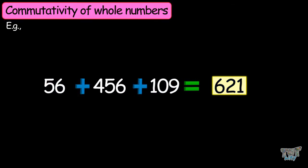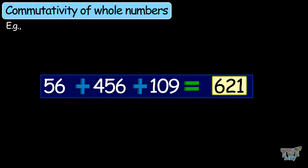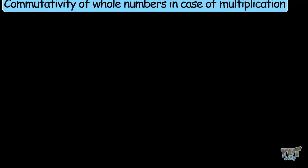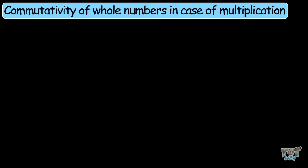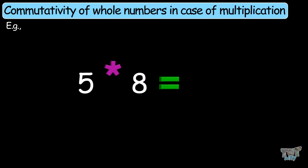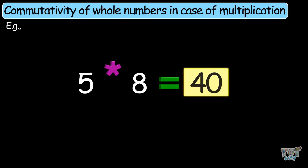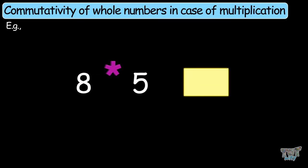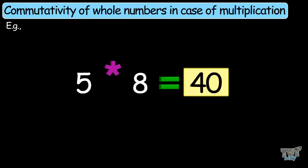This is the commutative property of whole numbers. Now let's see if we can multiply numbers in any way. 5 multiplied by 8 — the answer is 40. Move the numbers: 8 times 5. The answer is still 40. So this means you can move the numbers, or you can multiply numbers in any order, and the answer will always be the same.